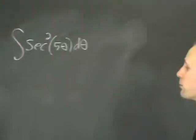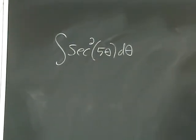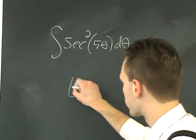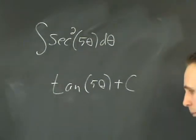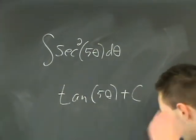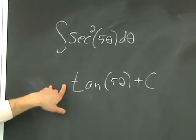So then, what could this be here? Well, the anti-derivative of secant squared is tan, so you might guess that the answer would be tan of 5 theta plus a constant. But when you differentiate this, you will get secant squared 5 theta, but it will produce an extra factor of 5 out here.